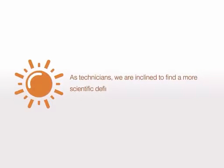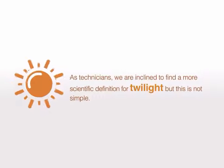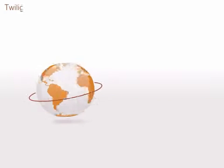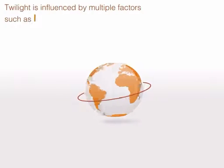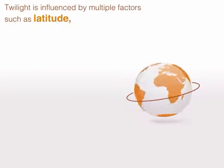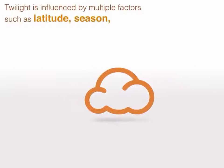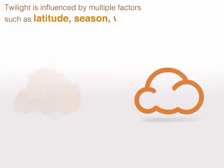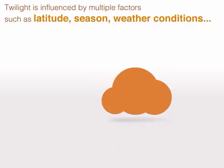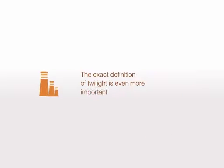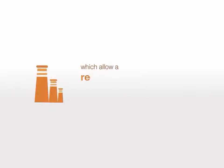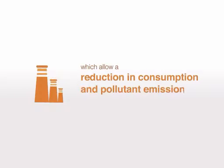As technicians, we're inclined to find a more scientific definition for twilight, but this is not simple. Twilight is influenced by multiple factors such as latitude, season, and weather conditions. The exact definition of twilight is even more important in adopting technologies which allow a reduction in consumption and pollutant emissions, while containing costs at the same time.